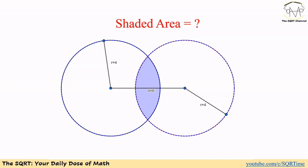Hello everyone, welcome to the SQRT channel. In this video we are going to take a problem from geometry. In this problem we have two circles and the radius of each circle is four units. The distance between the centers of these two circles is 6, and since the distance is 6, these two circles are overlapping. We are going to find the area between these two circles. Make sure you pause the video to think about this problem — see you in 20 seconds.